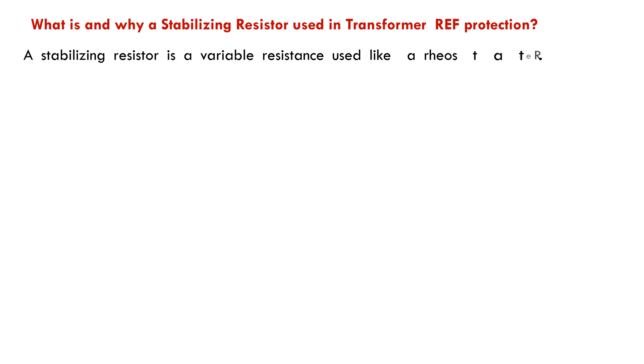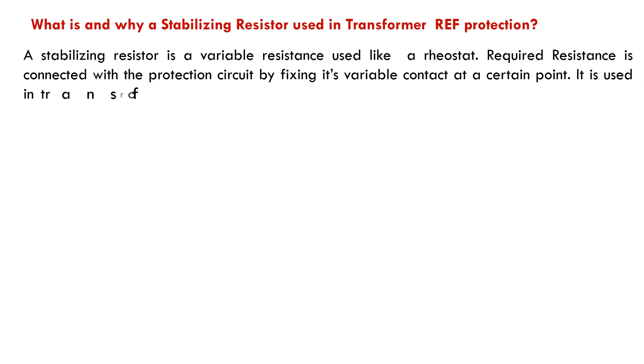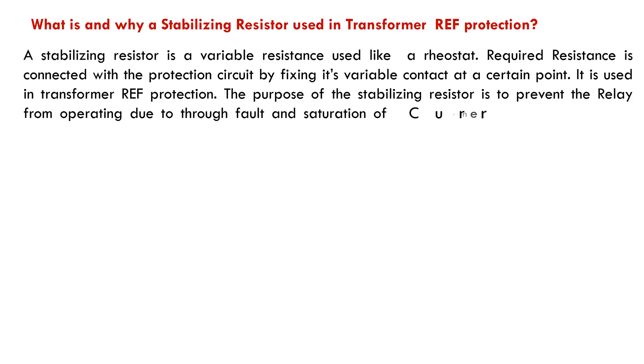What is and why a stabilizing resistor used in transformer REF protection? A stabilizing resistor is a variable resistance used like a rheostat. Required resistance is connected with the protection circuit by fixing its variable contact at a certain specific point. It is used in transformer REF protection. The purpose of stabilizing resistor is to prevent the relay from operating due to through fault and saturation of current transformers during flow of heavy current through the CT's primary during through fault.